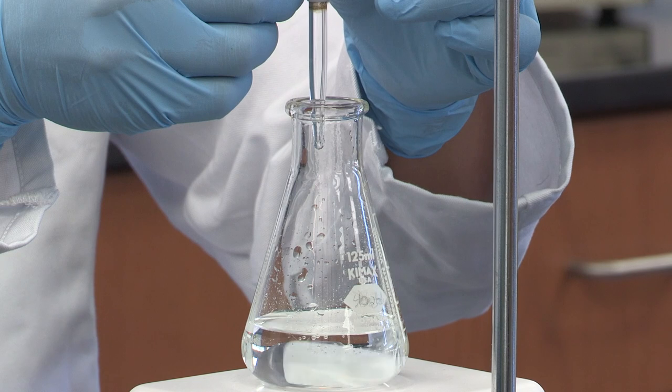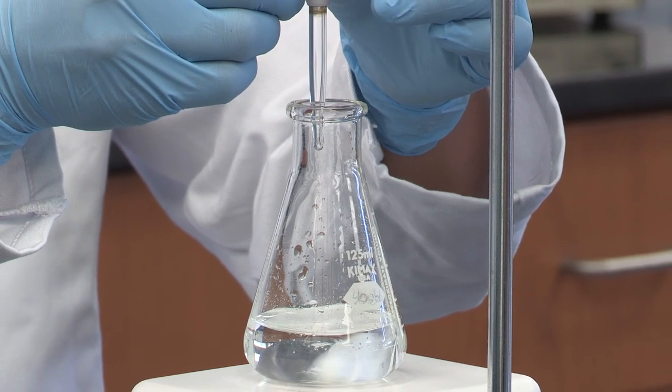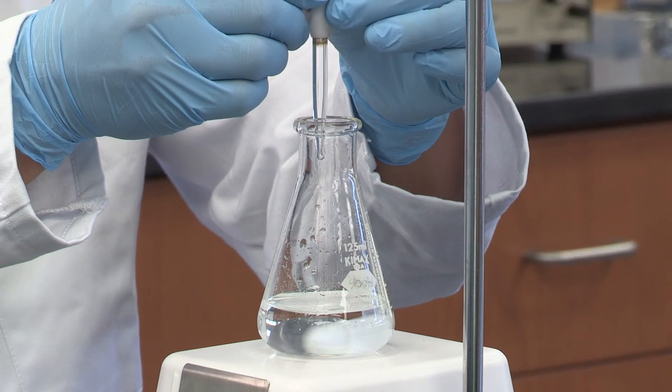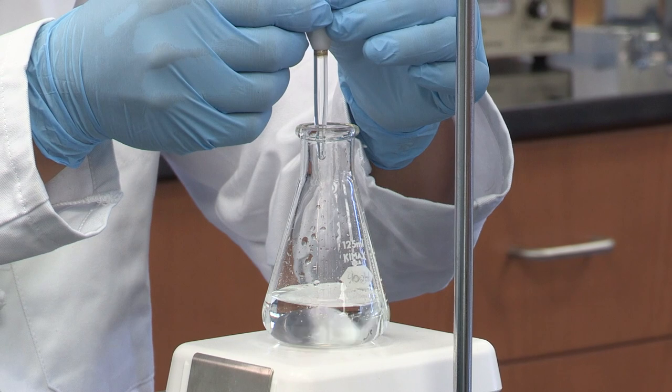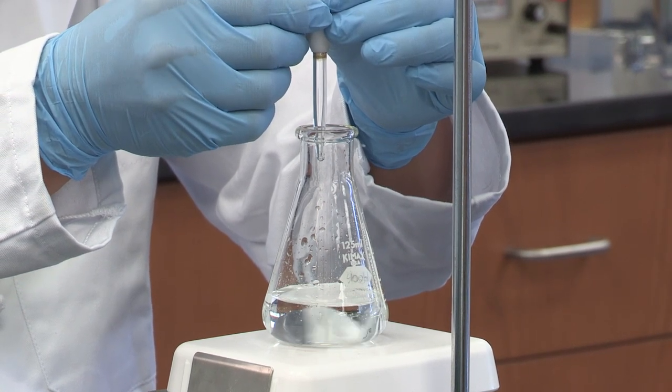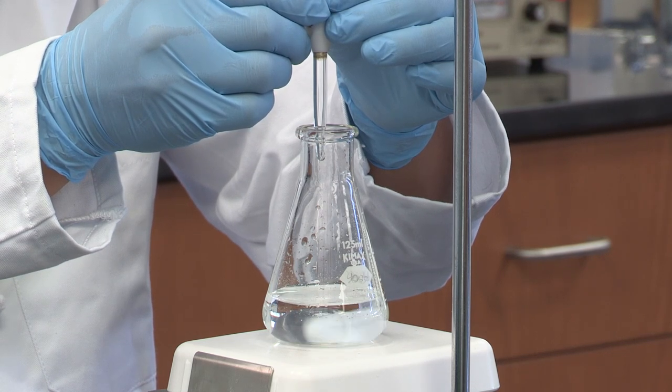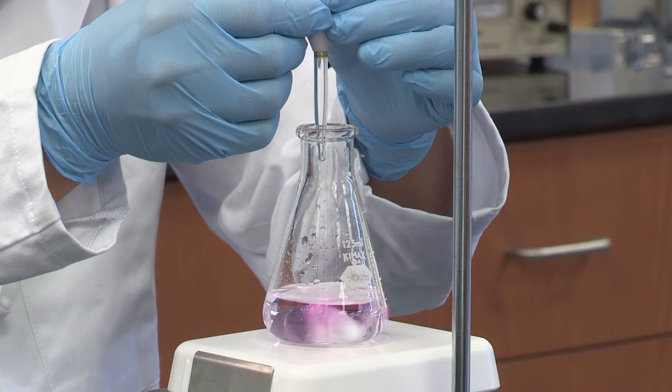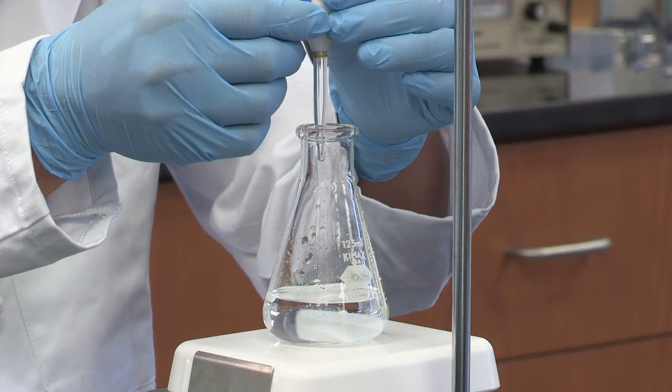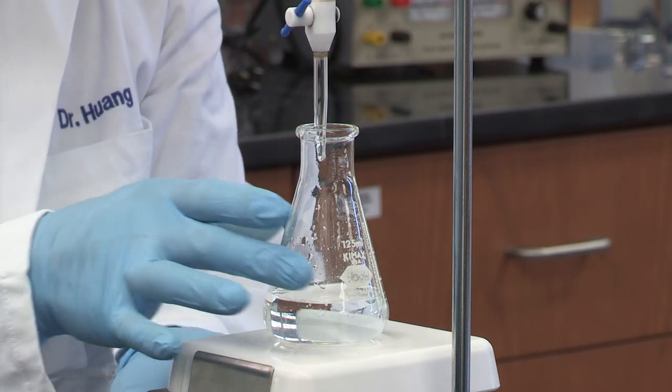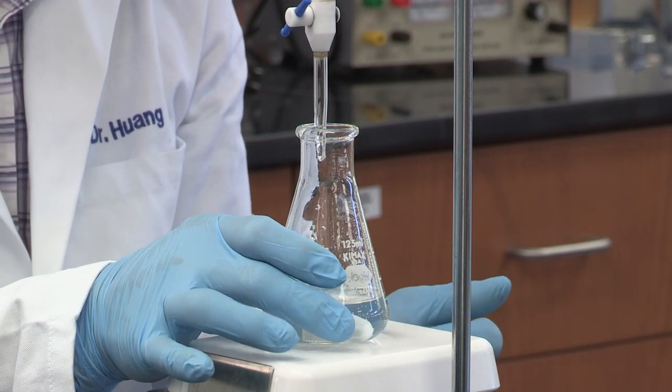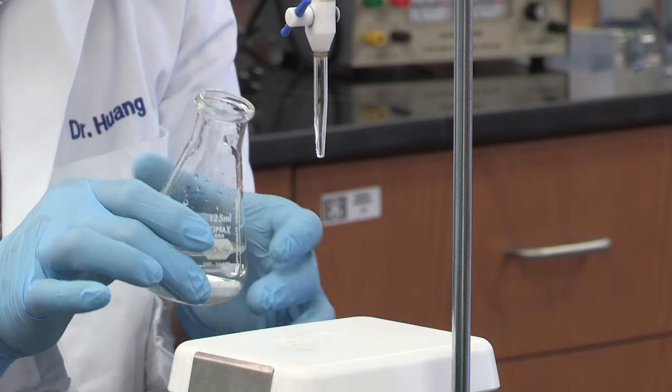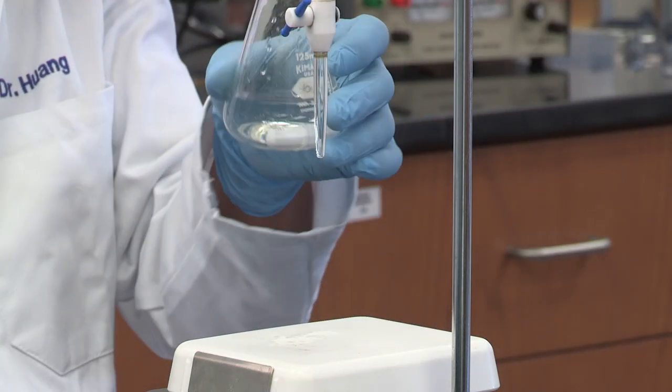Right now, you can see the color stays much longer. Now, we need to add drop by drop. This is the most important part. If you screw this up, you have to start over. Right now, you can see it stays really long. So, what I'm going to do is, I'm going to take this out. Let me turn off the stirrer first. And then, make sure if there is a tiny drop here, I'm going to let it touch. And then, I'm going to use my wash bottle to rinse this down.